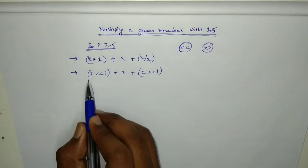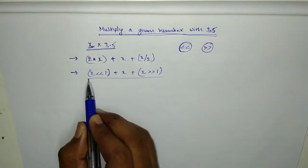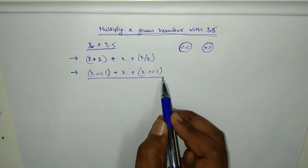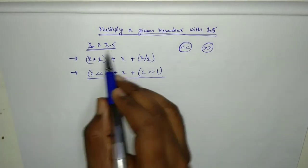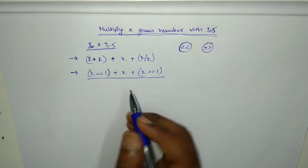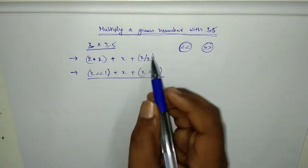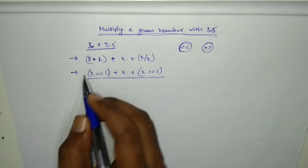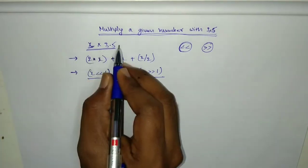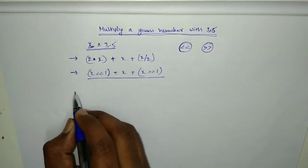So using this equation, using this expression in Java, we can multiply 3.5x. And there is one more way we can do the same thing. We can convert 3.5x into...